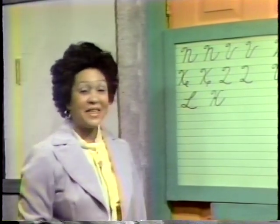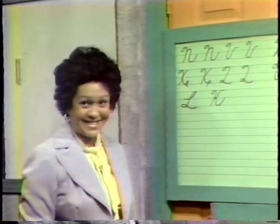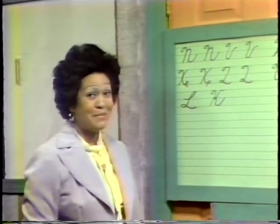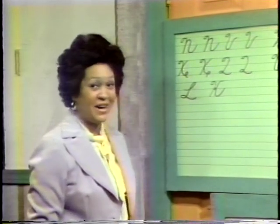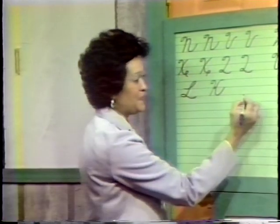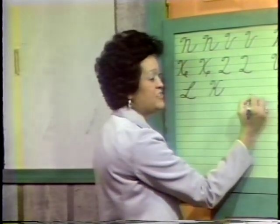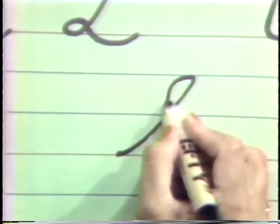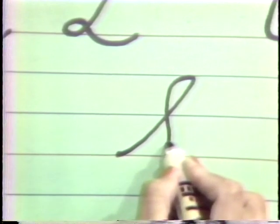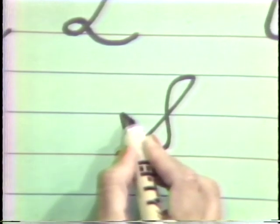The next letter that we're going to meet will be S. And S is also a member of what family? That's right — the upper loop family also. Remember, you start at your baseline, undercurve up, forming a loop right at your headline, come back to your baseline and we're going up to your midline and we're going to stop right there.